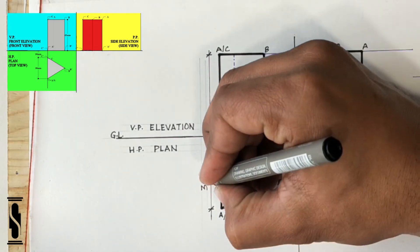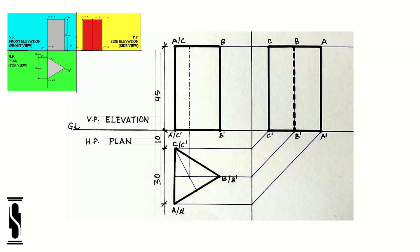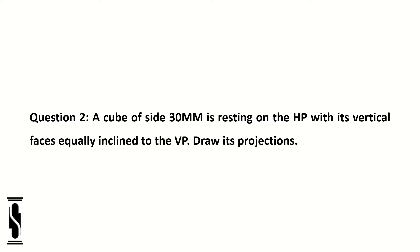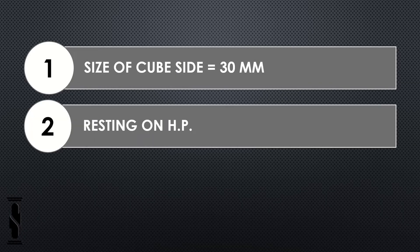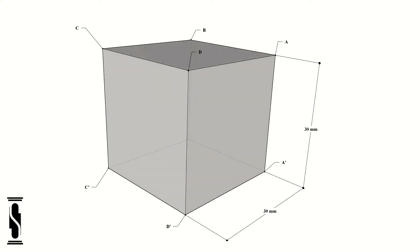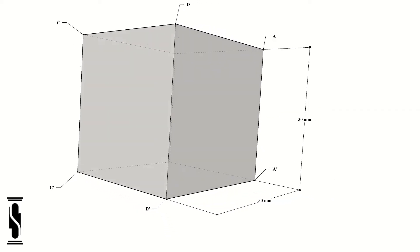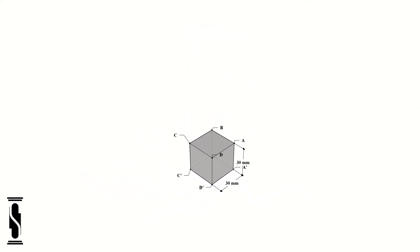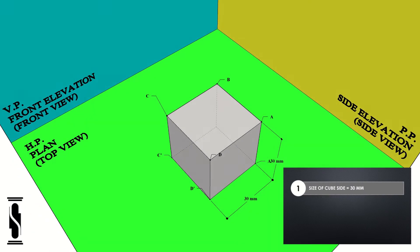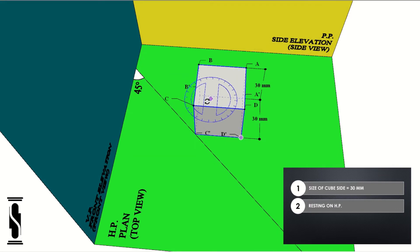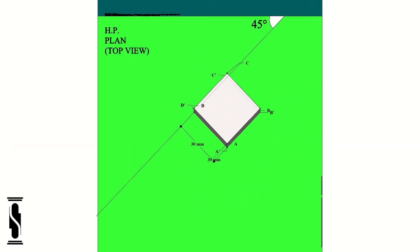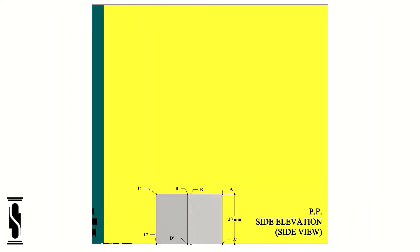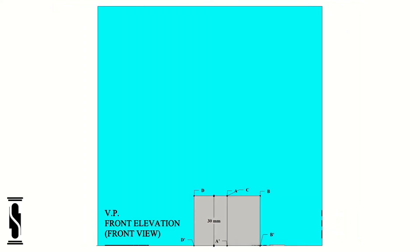Question 2. A cube of side 30mm is resting on the HP with its vertical faces equally inclined to the VP. Draw its projection. Here we have a cube — I named the upper base as A, B, C, and D, and the lower base as A dash, B dash, C dash, and D dash. The given size of the cube's side equals 30mm. Object's conditions: cube is resting on the HP; vertical faces equally inclined to the VP, which means making 45 degrees angle with VP. In this case, the square faces appear reduced in size in the front view, while the true shape of the square base is visible in the top view. So let's start to make the orthographic projection.